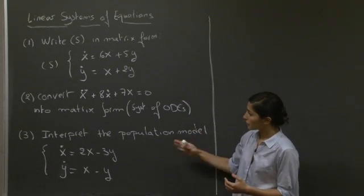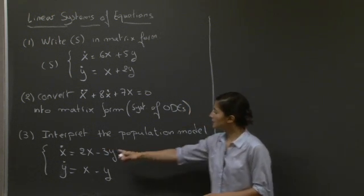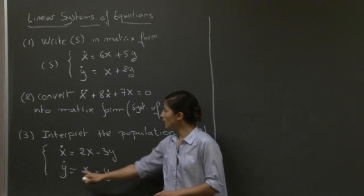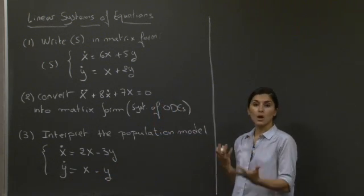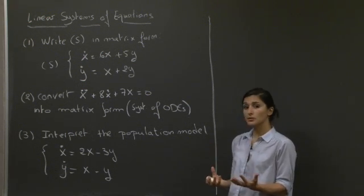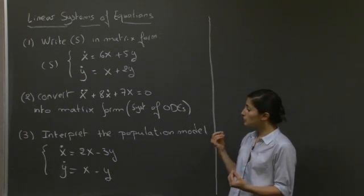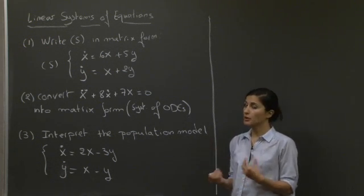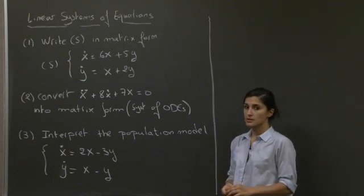In the third part of the problem, we're asked to interpret the population model: x dot equals 2x minus 3y, y dot equals x minus y. Here, x and y are modeling either a prey or predator, and you're asked to think about the interpretation of this system to determine which of x or y is the prey or the predator. Why don't you take a few minutes, think about these three questions, and I'll be right back.